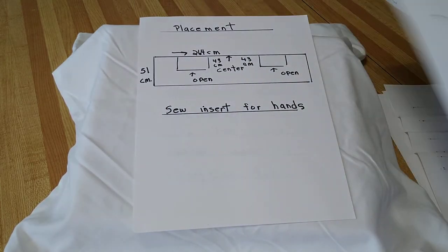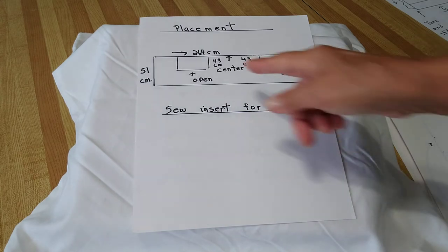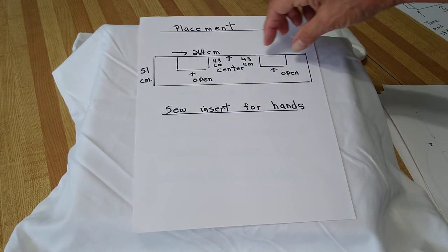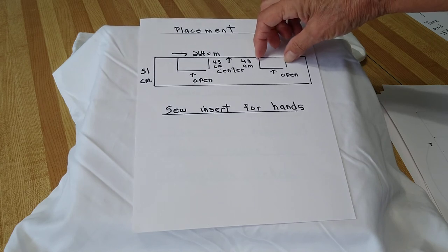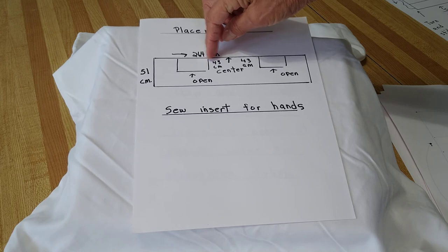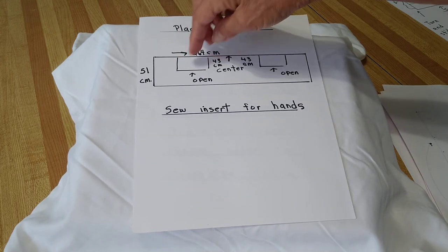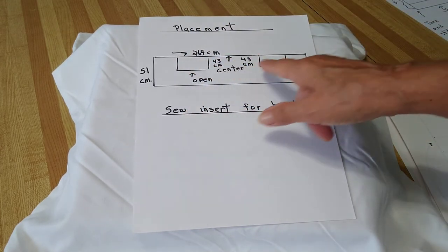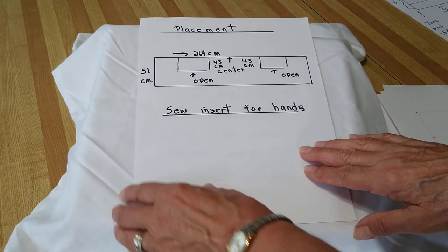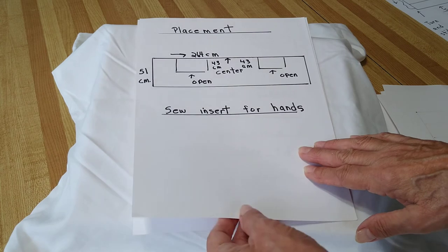I'll show you the placement. Here's the center: 43 centimeters in, you're going to put that insert 43 centimeters from the center. You're going to put the insert here, so your opening will be here. That'll be the insert for your hands.